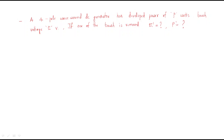In this session we will discuss the next problem. A four-pole wave wound DC generator has developed a power of P watts. First, write down the given data: it is a four-pole machine, so P equals 4. It is wave wound, which means irrespective of the poles, the number of parallel paths a equals 2. The power developed is P.